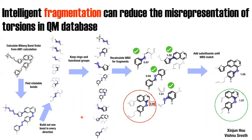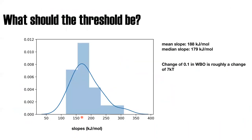The question is what threshold should you use. I looked at the distribution of slopes relating Wiberg bond order to barrier heights — the mean slope is about 188 kJ/mol and the median is around 180 kJ/mol. A change of 0.1 in bond order corresponds to roughly 7 kT in energy, which is pretty big. Using this, you can decide how accurate you want to be when setting your threshold.